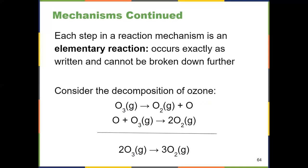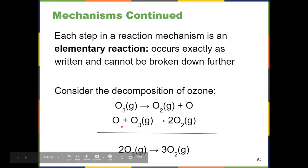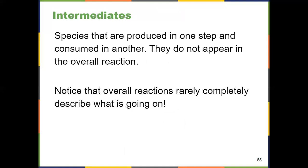On the next slide I'll introduce the concept of a chemical intermediate, but I'll show it right here on slide 64. A chemical intermediate is something that is produced in one step and then consumed in another step of a reaction. That's what this monatomic oxygen is — it gets produced in step one and then taken up in step two. So it doesn't appear in the overall reaction. You should be able to look at mechanisms and identify an intermediate: something produced in one step, consumed in another, and therefore always cancels out and doesn't appear in the overall reaction.